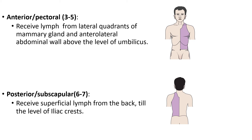The posterior or subscapular group, 6 to 7 in number, receives lymphatics from the back — the scapular region and the thoracodorsal region down to the iliac crest — which then drain into the posterior or subscapular lymph nodes.